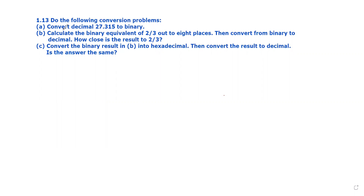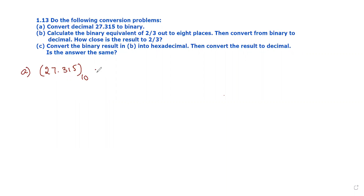The first problem is: convert decimal 27.315 to binary. We have 27.315 as the decimal number and we want to convert it into binary.